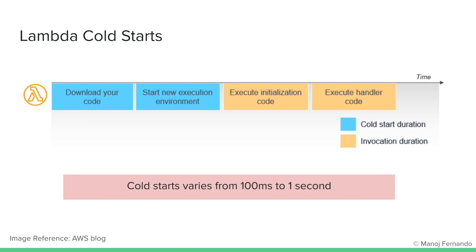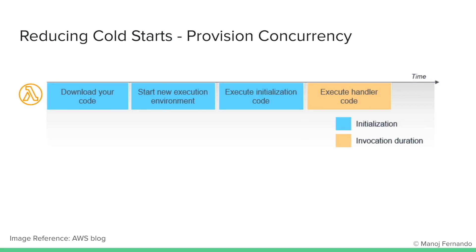So how do we prevent this? There are multiple ways to reduce cold starts. One of the recommended ways is to use provisioned concurrency. This essentially means we keep some execution environments already created for our Lambda functions — the code is already downloaded, the execution environment is already available, and the initialization code has already run. So whenever there's a request, it only has to execute the handler function, minimizing the cold start. However, when you add provisioned concurrency, you have to pay extra for that.